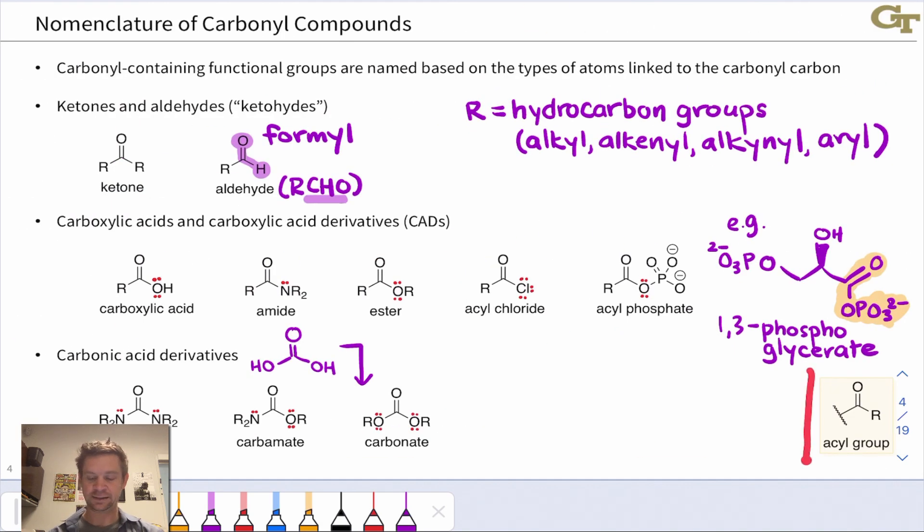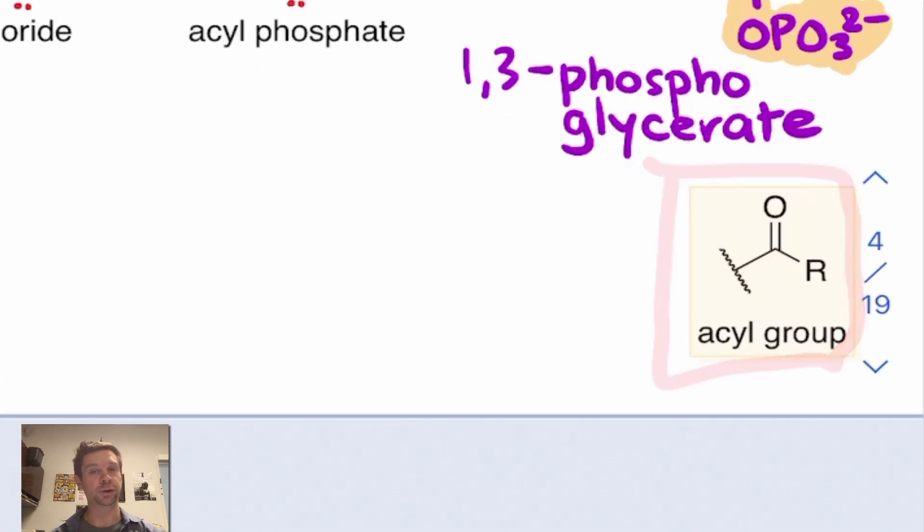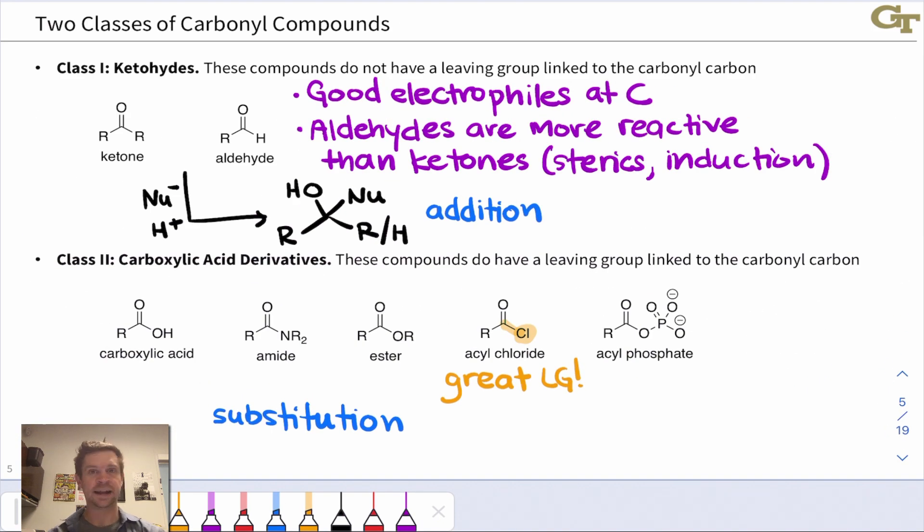I want to highlight the acyl group as an important point of nomenclature. An acyl group is a carbonyl group linked to a hydrocarbon group or H. This R is a hydrocarbon group or H, this carbonyl group is just a plain vanilla carbonyl group. Collectively, this is called an acyl group. So an acyl chloride has a chlorine linked to an acyl group.